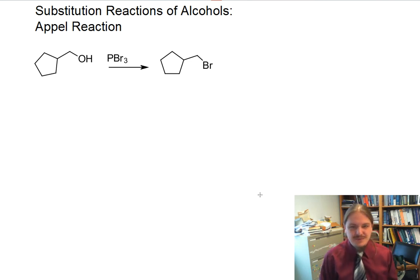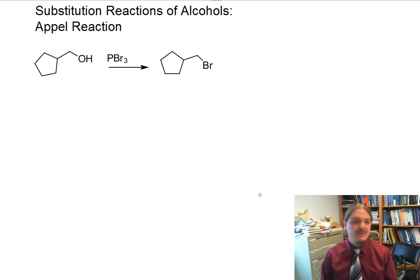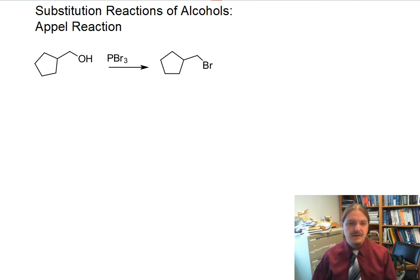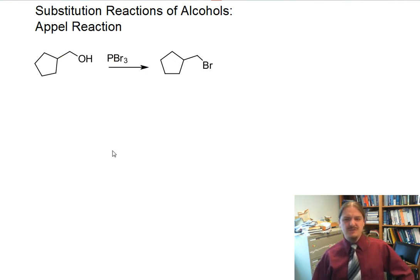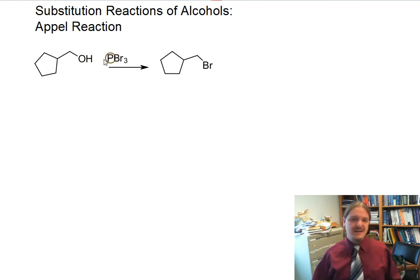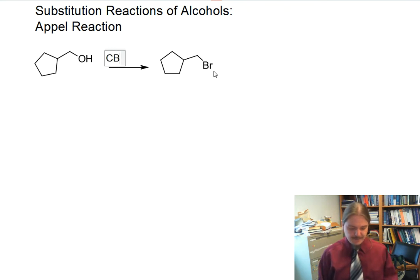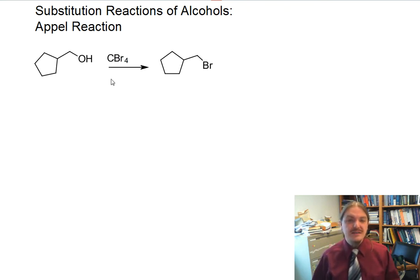In this video, I'm going to talk about the Appel reaction, another way to convert alcohols into alkyl halides. If I was really interested in converting an alcohol into an alkyl halide, based on my previous video, I might choose phosphorus tribromide. Phosphorus tribromide is actually pretty nasty to handle, and maybe I don't want to do that. So the Appel reaction provides an alternative.